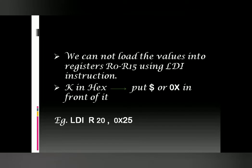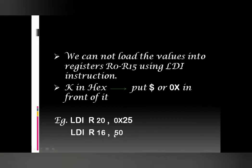For example: LDI R20, 0x25 — this loads register R20 with the immediate hexadecimal data 25. R20 is the destination register, and 0x25 is the immediate data. Another example: LDI R16, 50 — here there is no dollar symbol or 0x before the value, so it is automatically taken as a decimal value. This loads the decimal value 50 into register R16.